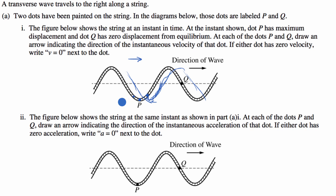The dot P is in the process of moving down on one side, while a neighboring point is moving up. When we're at our maximum displacement from equilibrium, we are going from moving downward to moving upward right at that moment. So right at this moment of maximum displacement, we have zero velocity. At point P, we write V equals zero.